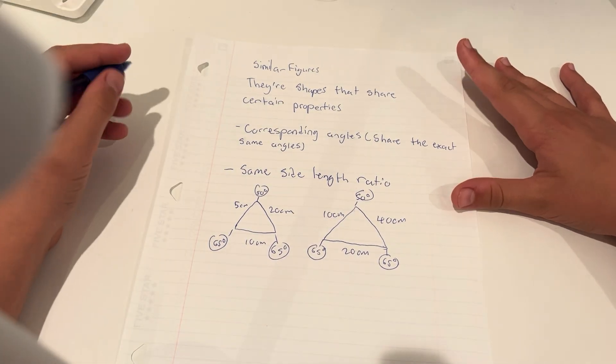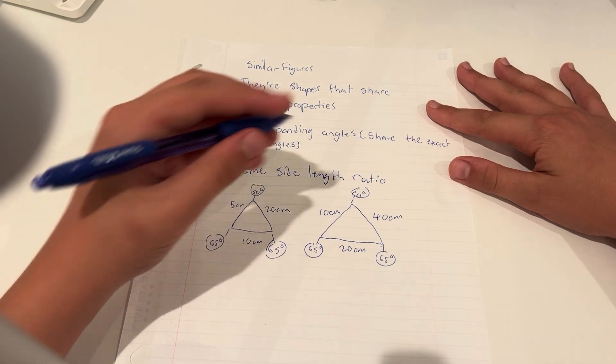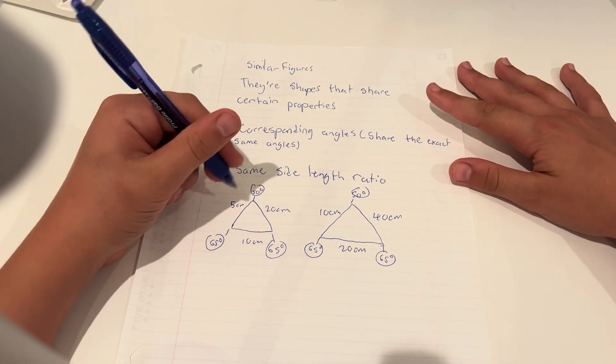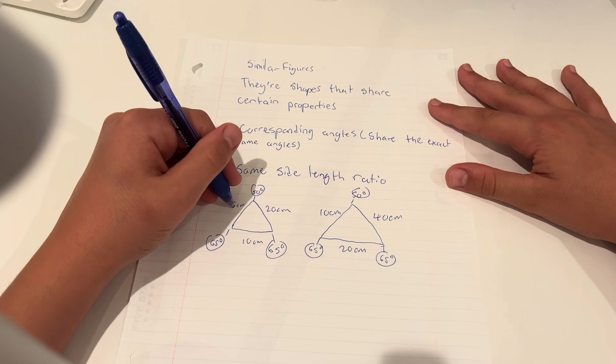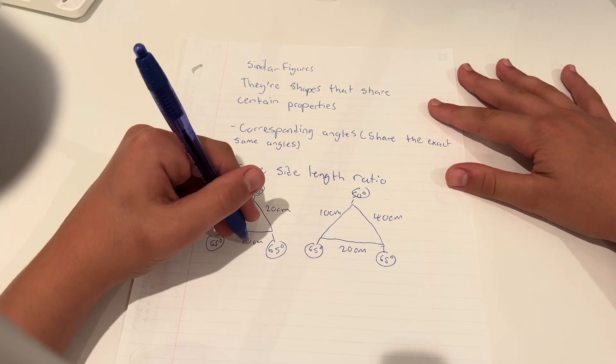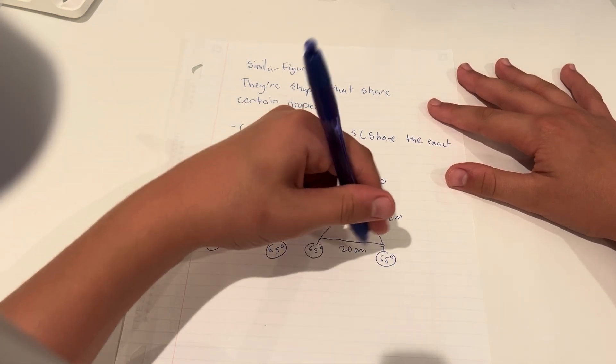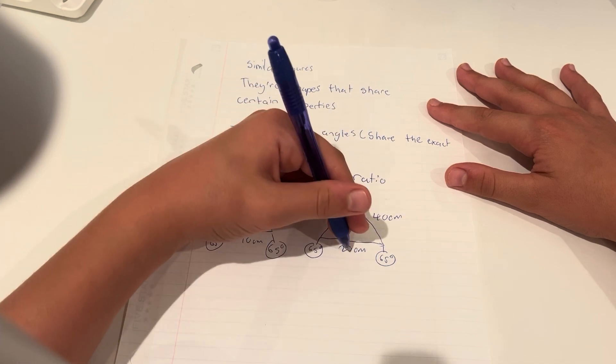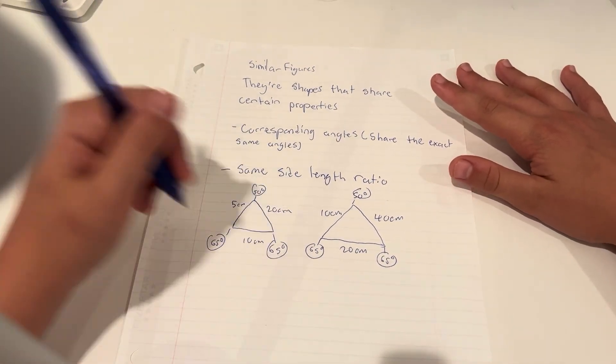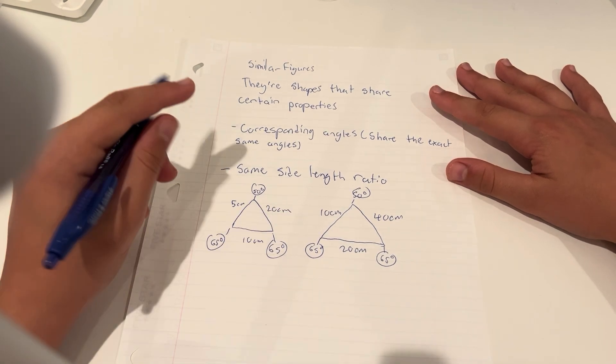Meaning that these two, even though they are different amounts, the ratio is the same. Meaning that 5 is half as big as 10, so this is twice as big as this, and this is twice as big as that. The ratios between side lengths are the same, and the angles are the same.